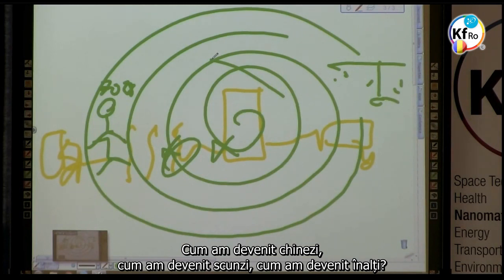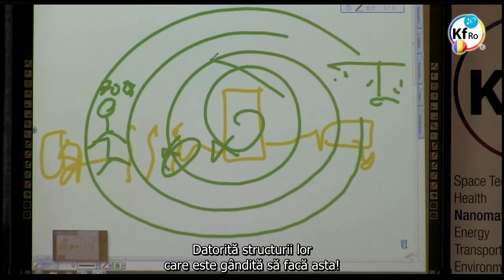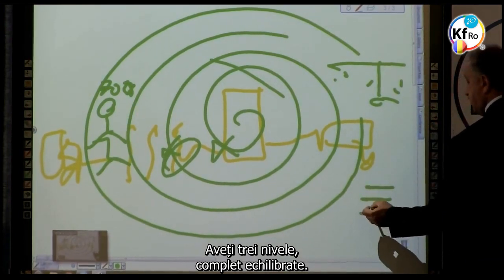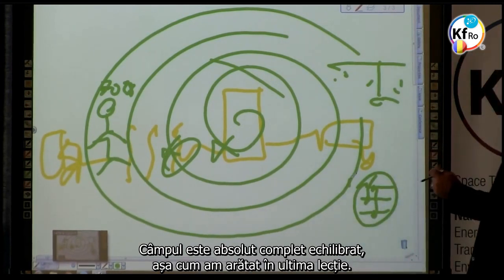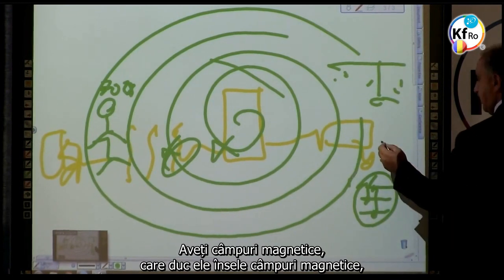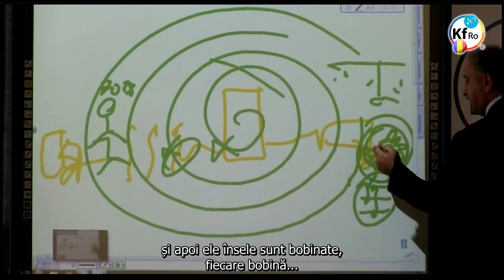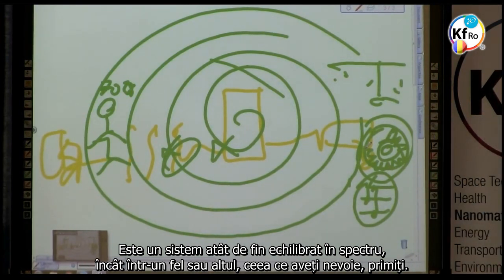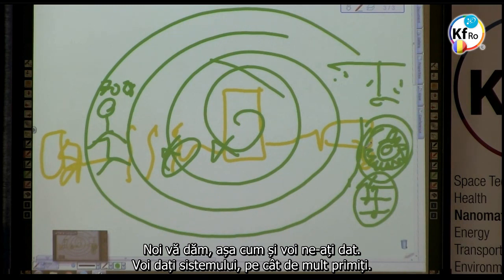This is the way our environment affects us. How did we become Chinese? How did we become short? How did we become tall? Due to these balances. These MaGrav systems send out a balanced field. Through the structure built to do this, you have three layers — total balance. If one is short, the other one feeds. The field is absolutely totally balanced, as I showed in the blast drawing. You have magnetic fields which themselves are magnetic fields, and then themselves they are coiled — each winding brings balance. It's such a fine-tuned, balanced system spectrum that one way or another, what you need, you receive. You will understand, in the coming time, we treat you the same as you treated us. We give to you as you gave us. You give to the system as much as you receive from the system.